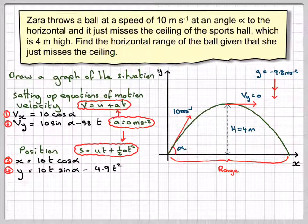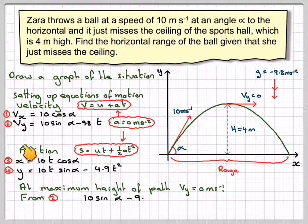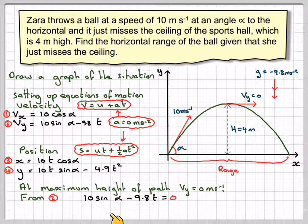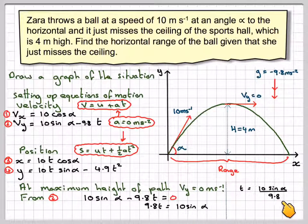Label these equations 1, 2, 3 and 4. At the maximum height of the path, Vy is equal to 0 metres per second. From equation 2, 10 sin alpha minus 9.8T equals 0, so T equals 10 sin alpha divided by 9.8.